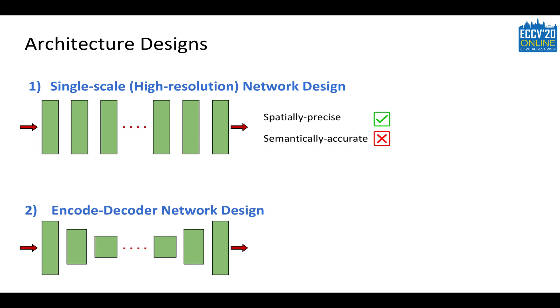The networks based on single scale design do not use any downsampling operation and therefore generate images with spatially precise details. However, these networks are less effective in encoding contextual information due to their limited receptive field. Whereas the second approach provides semantically reliable but spatially less accurate outputs.